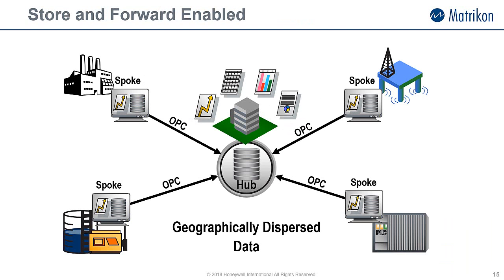Another great feature of the Matricon OPC Desktop Historian is the built-in store and forward functionality, which is sometimes called hub and spoke. If you have multiple plants that are geographically dispersed, why not consider folding the data from Desktop Historian at your local plants back to a central location? Because of the open nature of OPC, your local sites can access the archived data locally, whilst enabling your head office to also access the data.